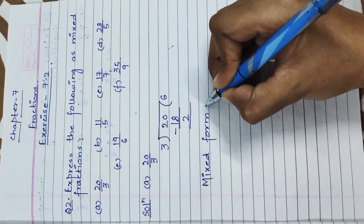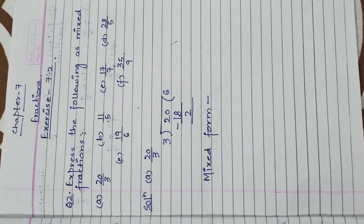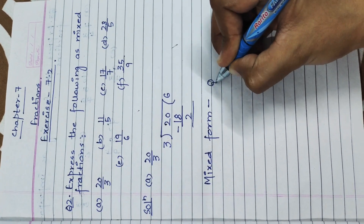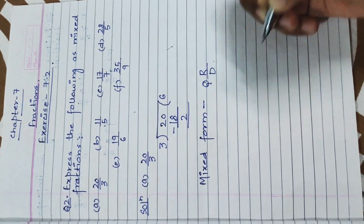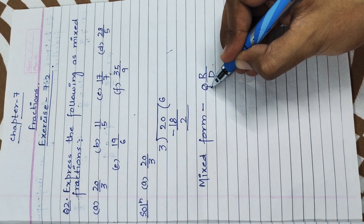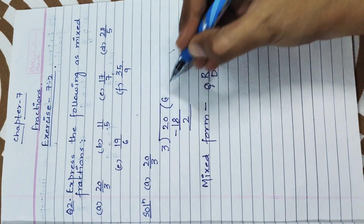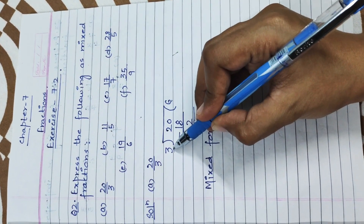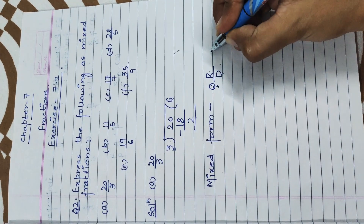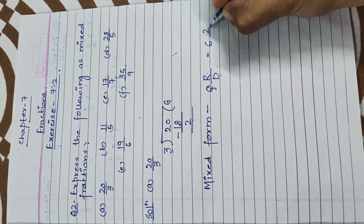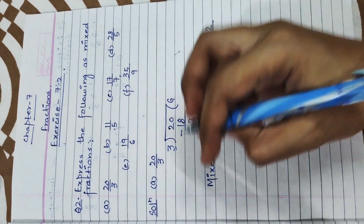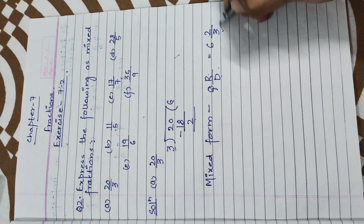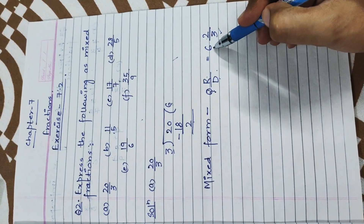Now we write the answer in mixed form. For this first part, I'll show how to write the fraction in mixed form. We always write it as: quotient, then remainder upon divisor. In this division, 6 is the quotient, 2 is the remainder, and 3 is the divisor — the number used for division. So the answer is 6 whole 2 upon 3.